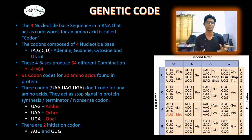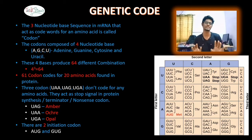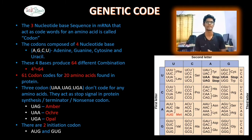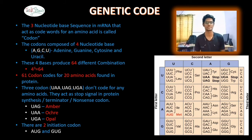These 3 stop codons are also called terminator or nonsense codons. They act as signals to stop translation. UAG is called amber, UAA is called ochre, and UGA is called opal.